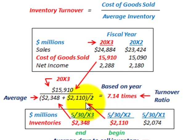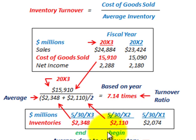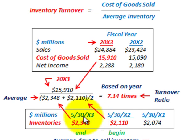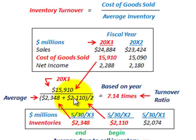To get the average inventory, you take the beginning inventory and the ending inventory. Since we're looking at mid-year — the end of May — 5/30/x2 would be our beginning inventory, which was $2,110,000. The ending inventory, twelve months later at 5/30/x3, was $2,348,000.